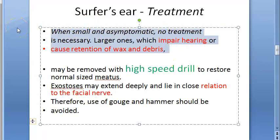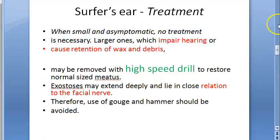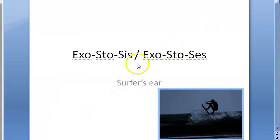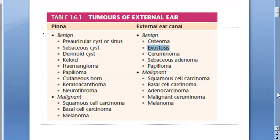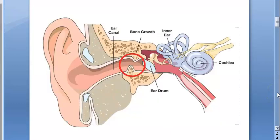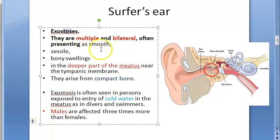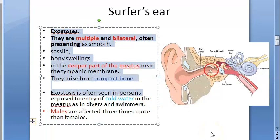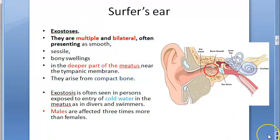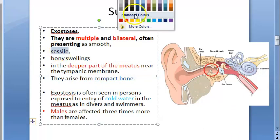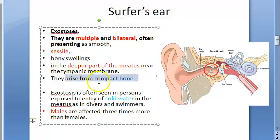The problems this person has include water retention, wax and debris retention, and impaired hearing. To summarize: we started with exostosis or surfer's ear, a benign condition of the external ear canal. There are multiple bilateral protrusions into the external auditory canal in the deeper part of the meatus. These are sessile bony swellings deep in the meatus.